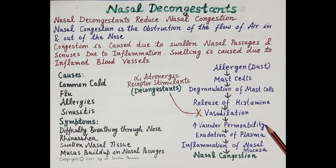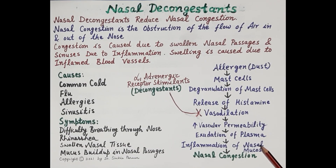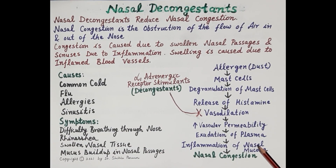Due to vasoconstriction, vascular permeability of blood vessels reduces. The blood vessels become less leaky, less fluid is leaked into the nasal mucosa, and this reduces inflammation. Because of the reduced inflammation, there is also reduced secretion of mucus, and thus nasal congestion and nasal obstruction are reduced.